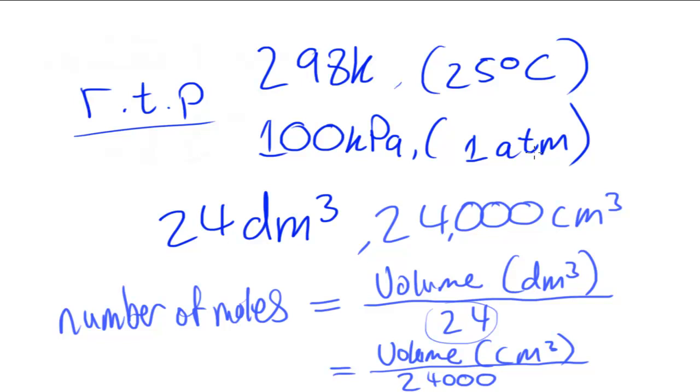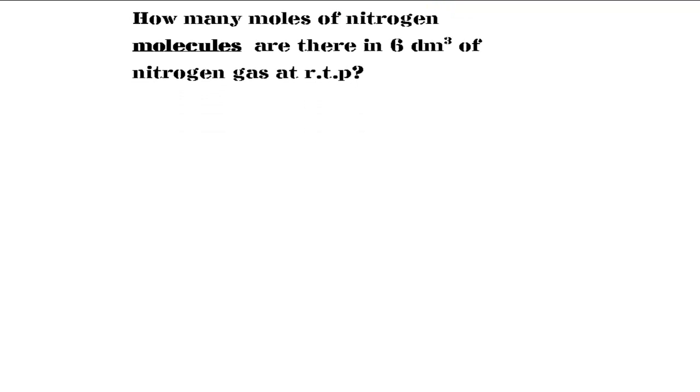Now, I'm going to go through two examples, questions which involve the application of this principle, the application of this equation. Let's have a look at the first question. How many moles of nitrogen molecules are there in six decimetres cubed of nitrogen gas at room temperature and pressure? Looking at this question, the first thing which we'd want to do, and bear in mind that we don't need to know the molar mass of this stuff. These particular questions don't involve finding out the molar mass. But there are questions which may involve using that volume to find the moles and find the molar mass and all of those sort of things. But this question, we don't need to do that.